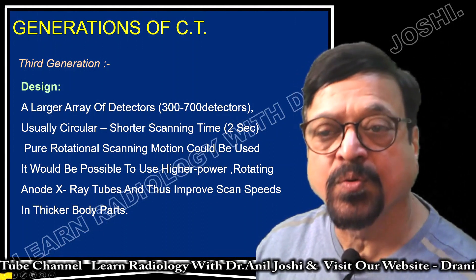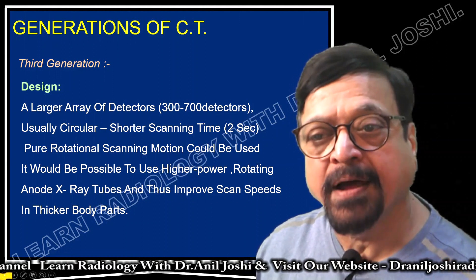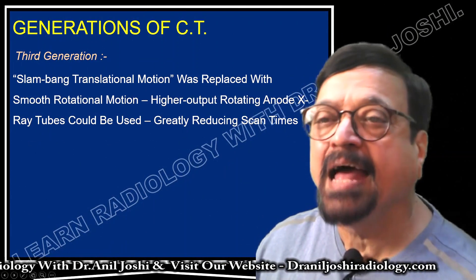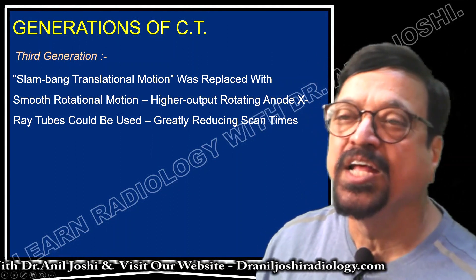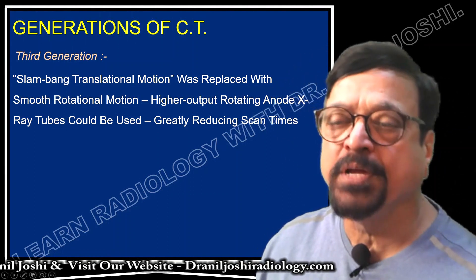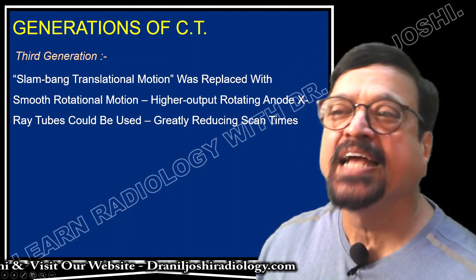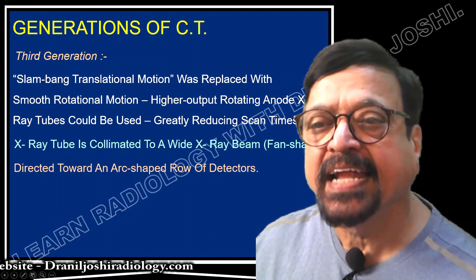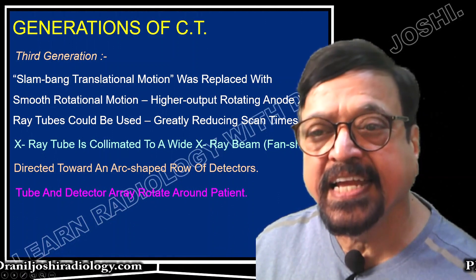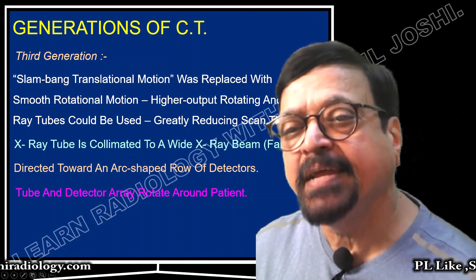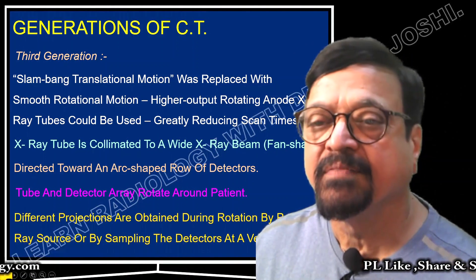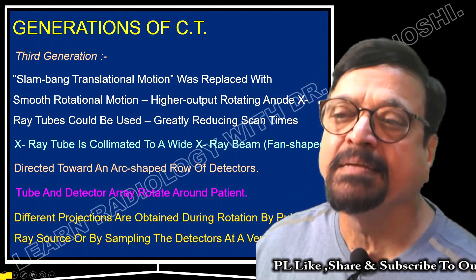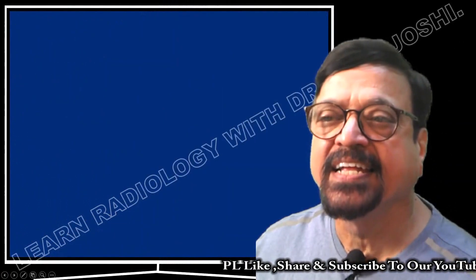What was achieved with the third generation? We could scan a single breath-hold thick body part like chest, abdomen, etc. The back-and-forth translation motion was replaced with smooth rotational motion. Higher output rotating anode X-ray tubes could be used, greatly reducing scanning time. The X-ray tube is collimated to a wider fan-shaped beam directed towards an arch-shaped row of detectors, providing better image quality. Different projections are obtained during rotation by sampling the detector at a very high rate.